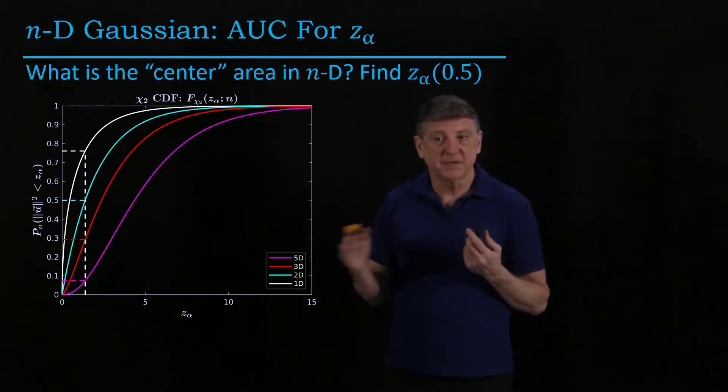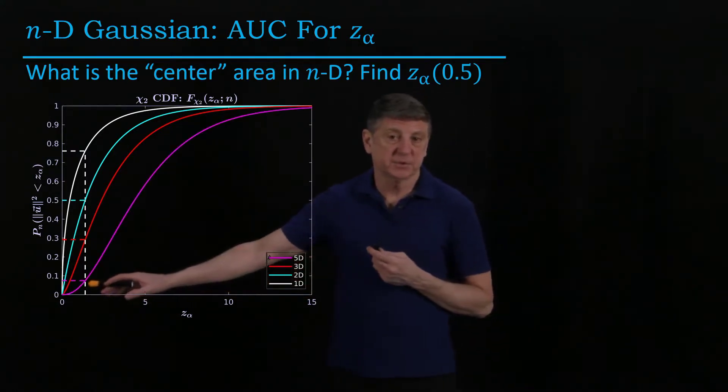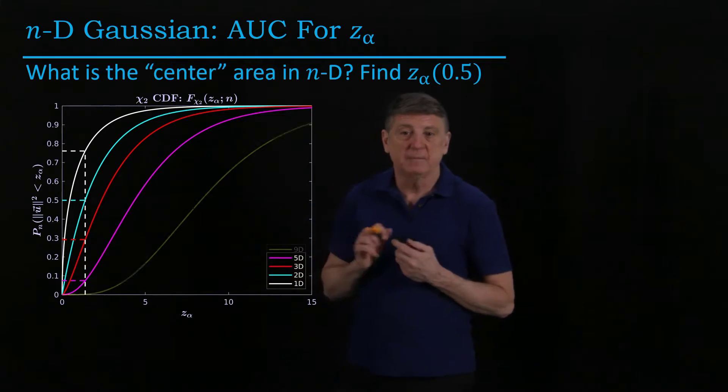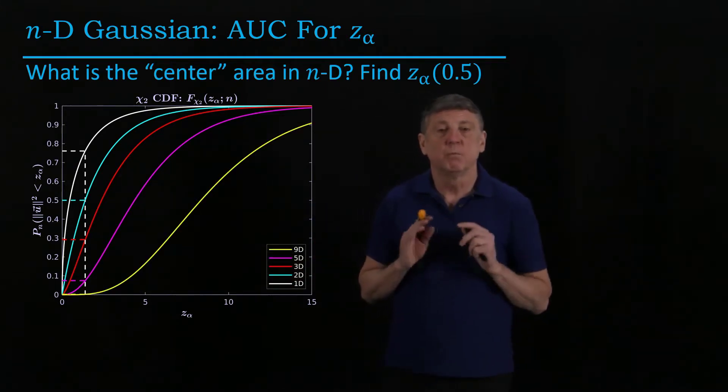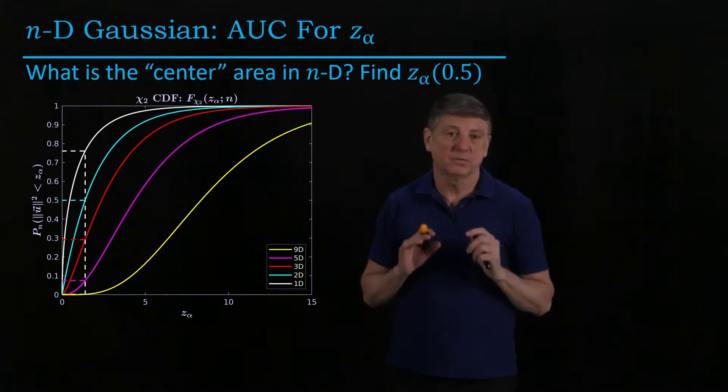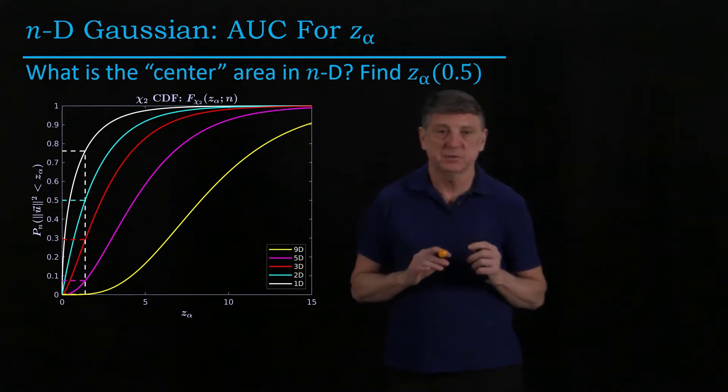As we go to five dimensions, it's less than 10% are located centrally. And by the time we're at nine dimensions, more or less, none of our data are located centrally. All of our data are in the tails of the Gaussian distribution.